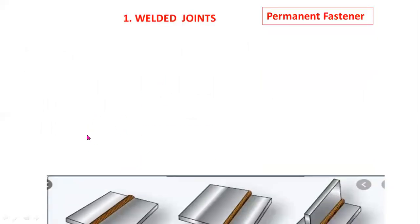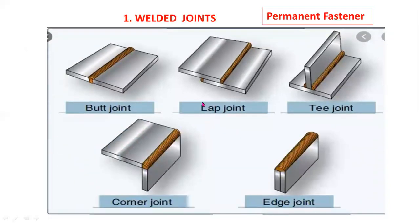This is the example for welded joints. These are all the different types of welded joints. Welded joints are also called permanent joints. This is a butt joint, this is a lap joint, this is a T joint, this is a corner joint, and this is an edge joint. These are all examples for welded joints.